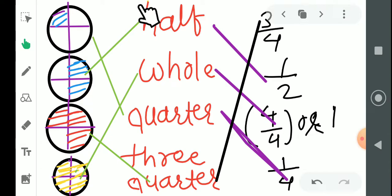The second part is how can we write these in numbers. We can write half in numbers as 1/2. For the whole, we can write it as 4/4 or 1.